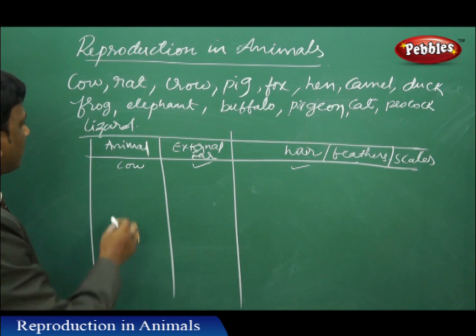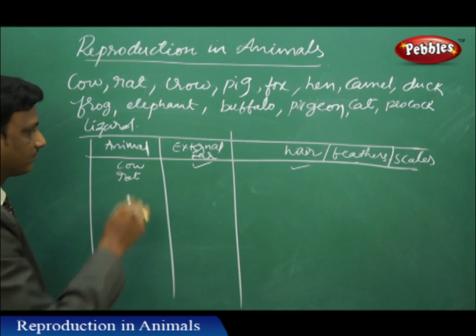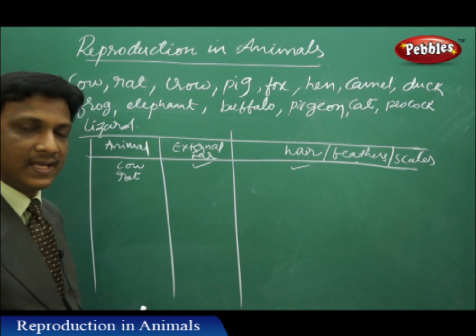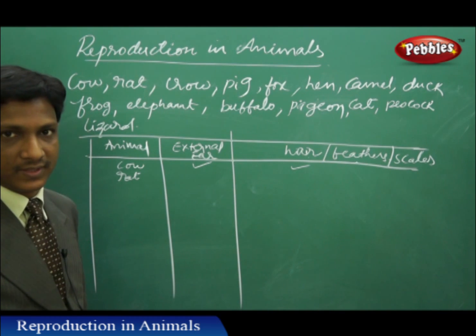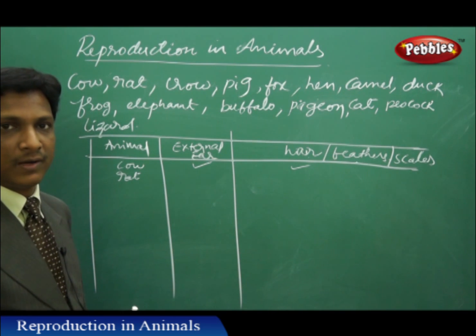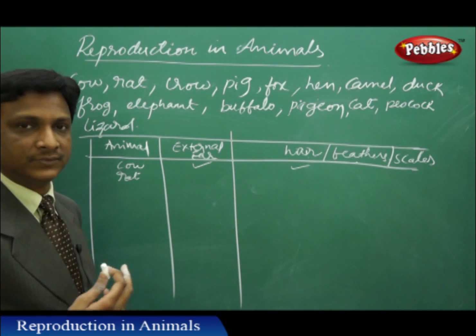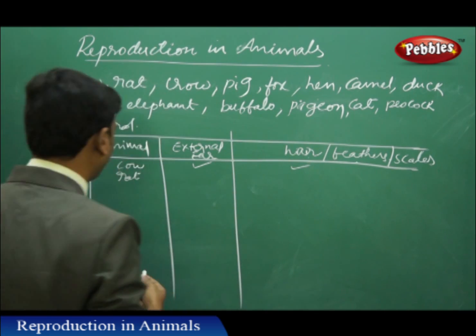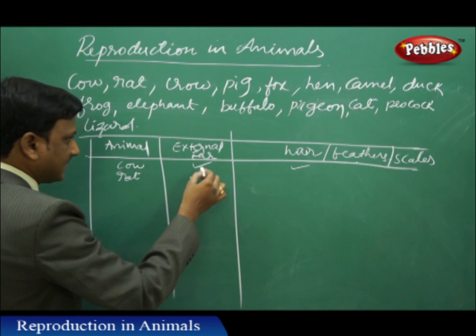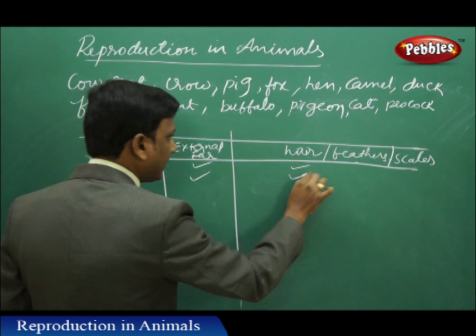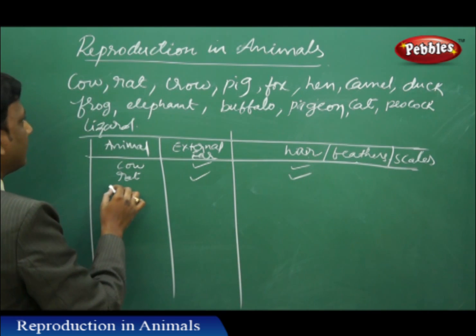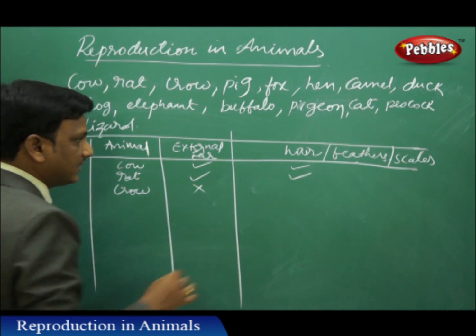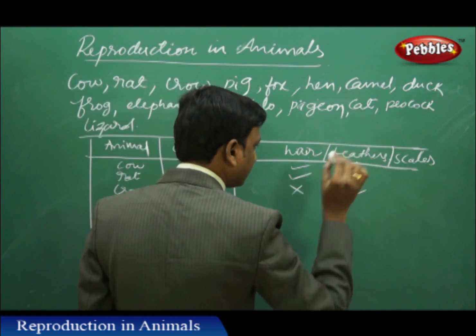The next one is rats. For cows, even though the hair is not clearly seen, hair is present on certain parts of its body. So it may not have hair like a dog's fur, but it may have a certain amount of hair. Rat — it has external ear and it has hair. And if you see the crow, it is not having external ear, it is not having hair, it is having feathers.